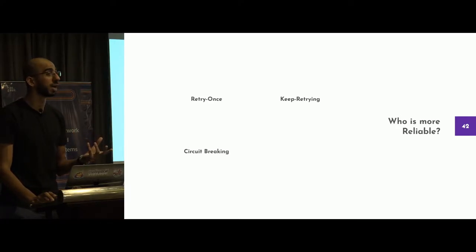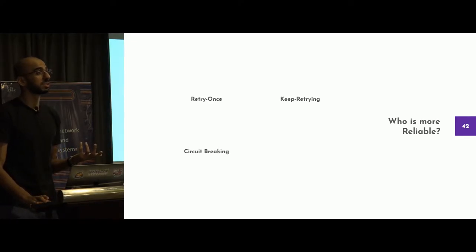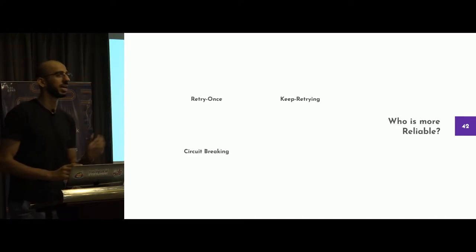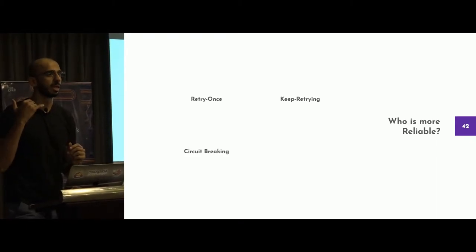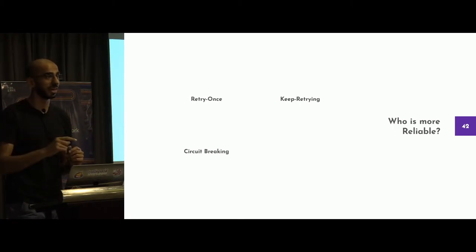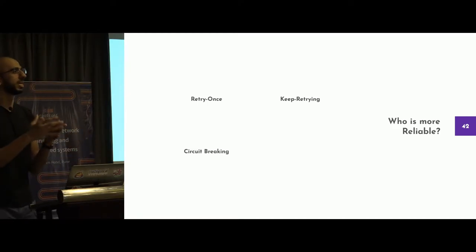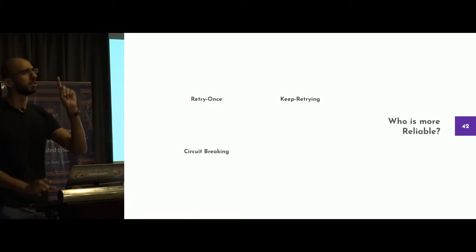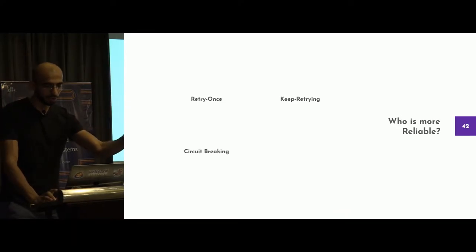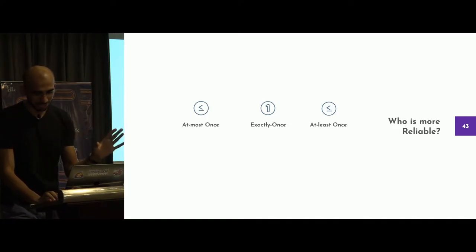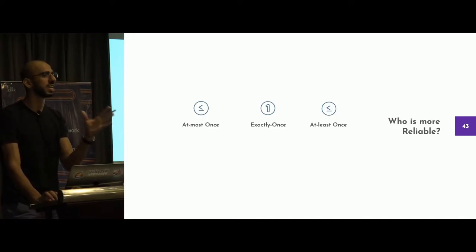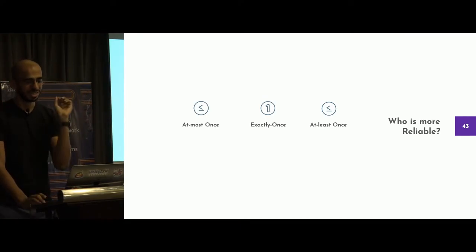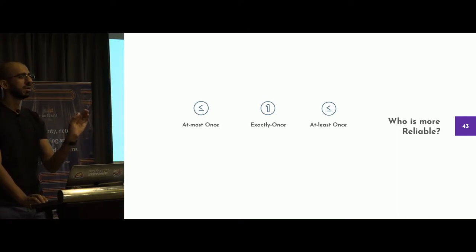You don't know which was more reliable. Keep retrying — what if you deduct a balance multiple times? Let's take a user example: I am calling Twilio to remind the user to buy milk. But Twilio is failing to respond with an acknowledgement to me. If you keep retrying, the user is going to get a call five times: buy the milk, buy the milk, buy the milk. They'll delete the app. It defines user experience. Now, I'm going to ask: who is more reliable — at most once delivery, exactly once delivery, or at least once delivery?